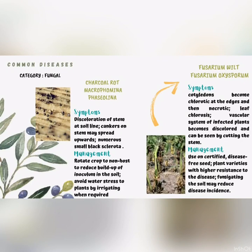For common diseases under the category of fungal, the first disease is charcoal rot, also known as Macrophomina phaseolina. The symptoms for charcoal rot are discoloration of the stem at the soil line, cankers on the stem may spread upwards, and numerous small black sclerotia. The management is to rotate crops to non-hosts to reduce build-up of inoculum in the soil.